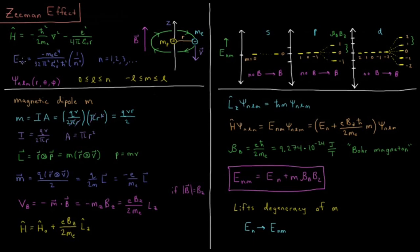The energy depends only on the principal quantum number n. Our wave function psi depends on three quantum numbers, n, l, and m, and is a function of the spherical polar coordinates r, theta, and phi. The energy as a function of n equals minus the mass of the electron times the charge of the electron to the fourth, over 32 pi squared epsilon naught squared h-bar squared, times 1 over n squared, where n starts at 1 and goes up as an integer to infinity. The value of l for a given n is an integer between 0 and n, and for a given l, the quantum number m is an integer between minus l and plus l.